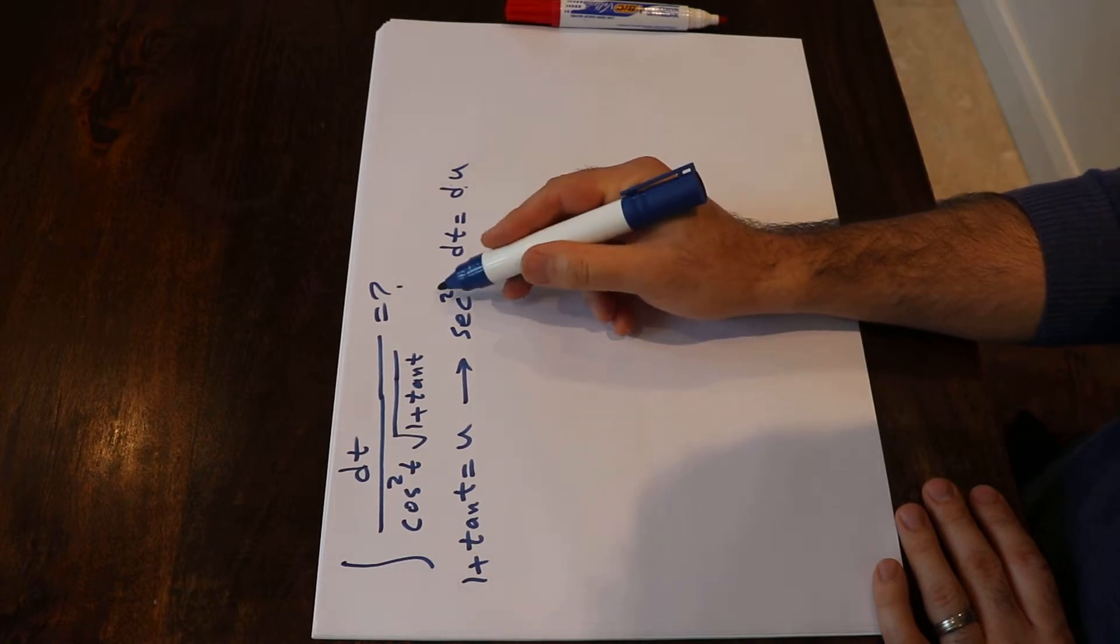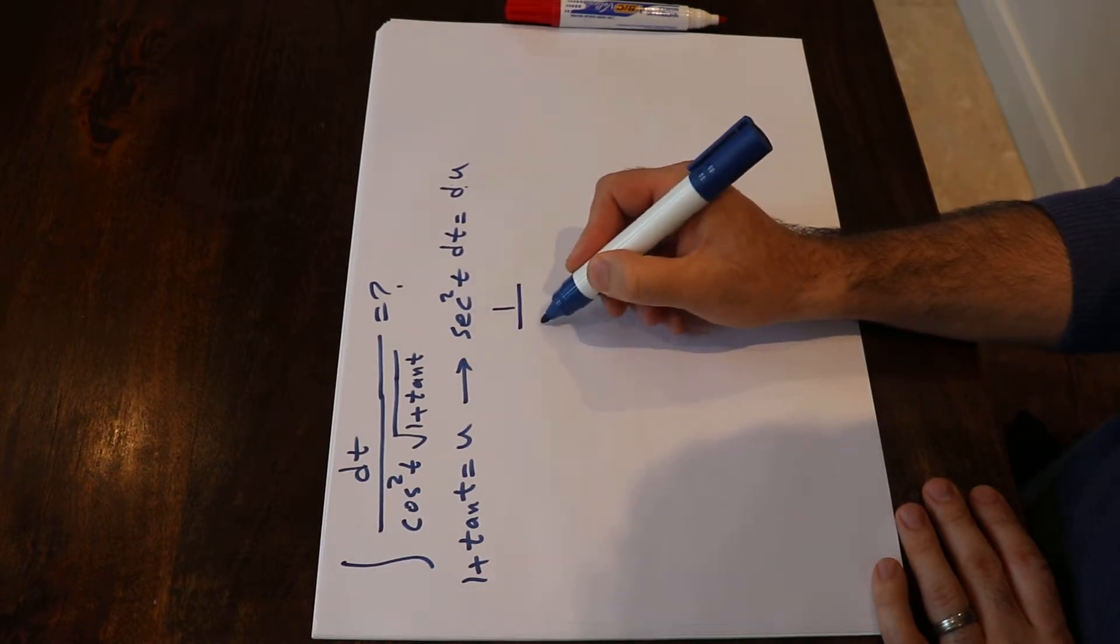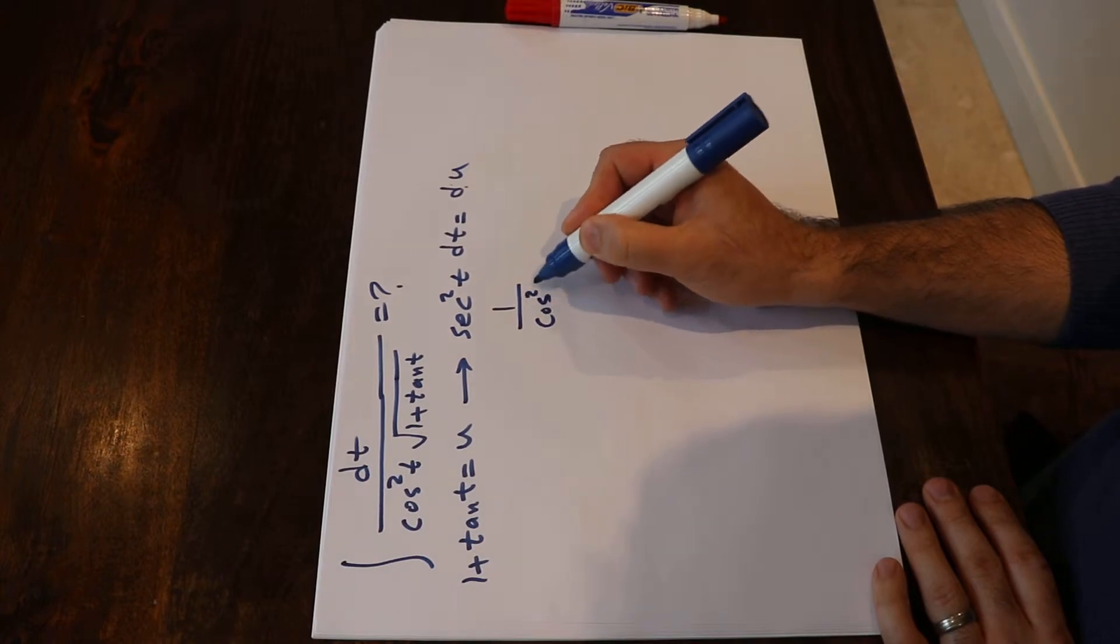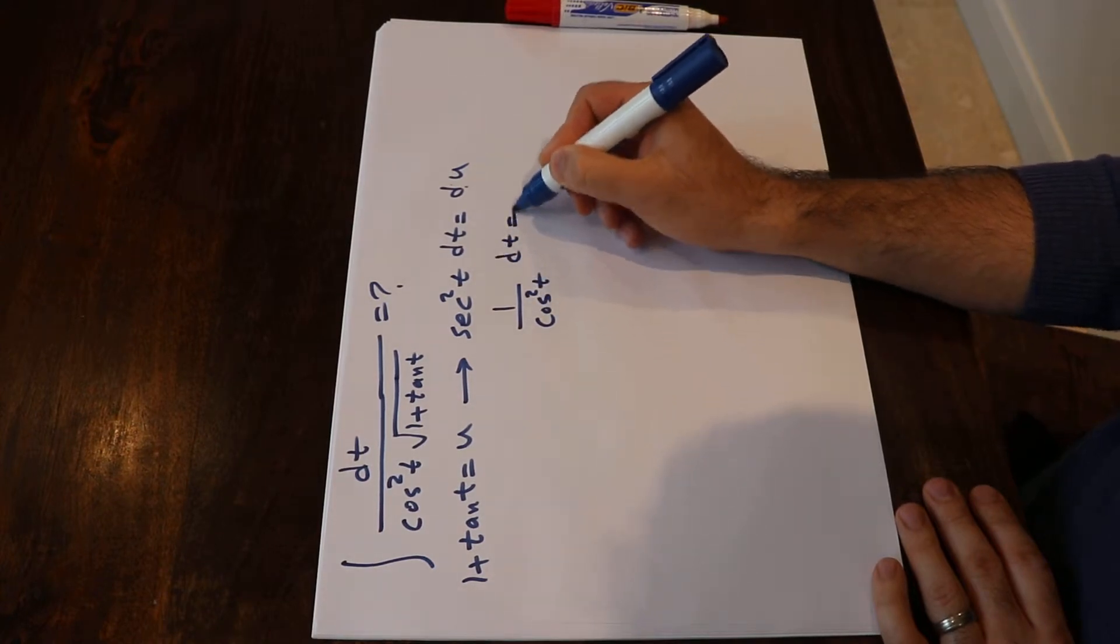So by definition, secant square t is equal to 1 divided by cosine square t, so dt divided by cosine square t will be equal to du.